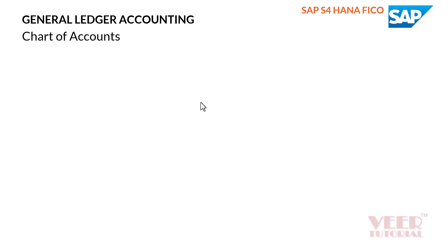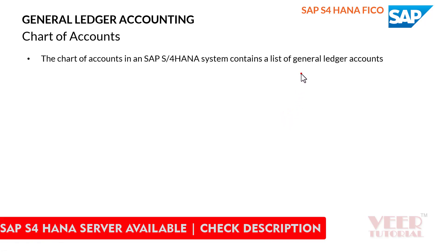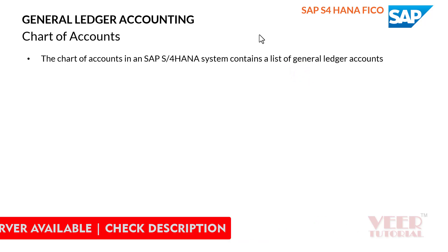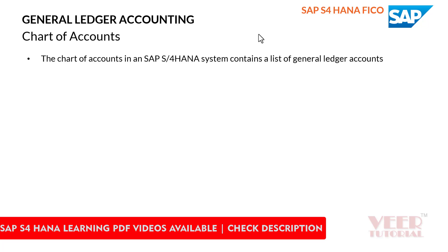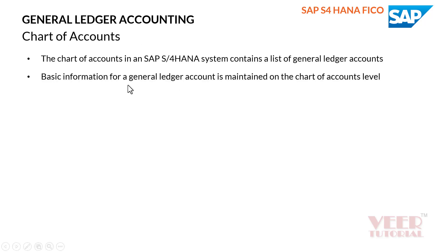In this video we are going to learn about Chart of Accounts. The Chart of Accounts in SAP S4HANA contains the list of general ledger accounts. All business transactions are stored at the GL accounts level, and the balances of these accounts are reflected in the financial statements. This is the top-level master record — we first create or define the chart of accounts.